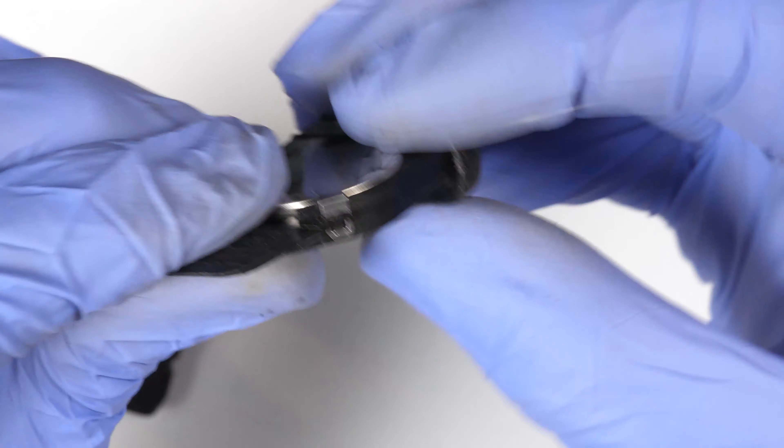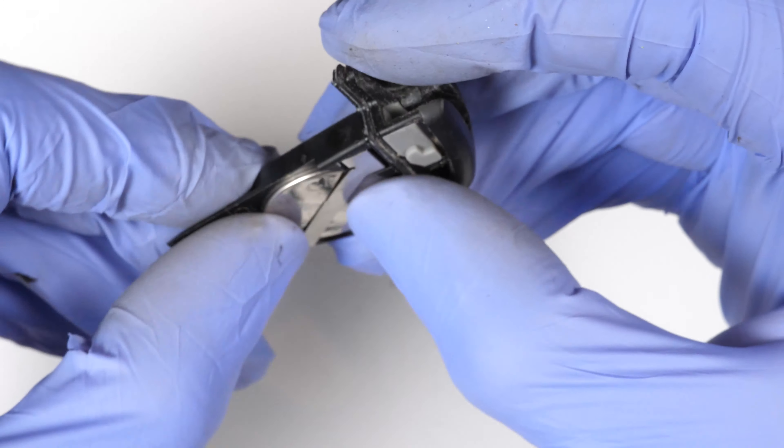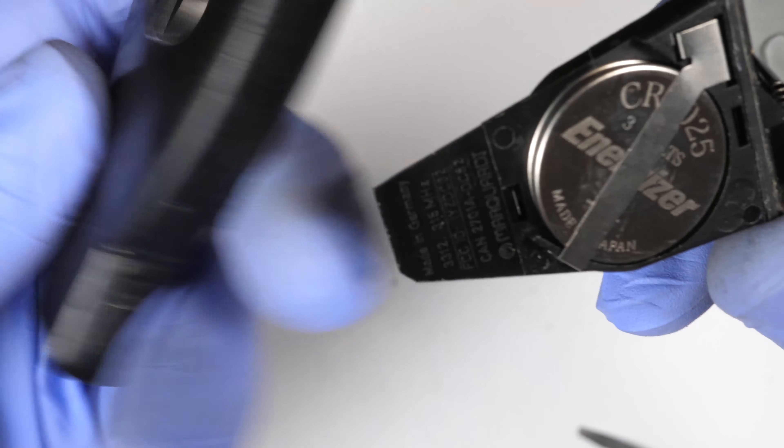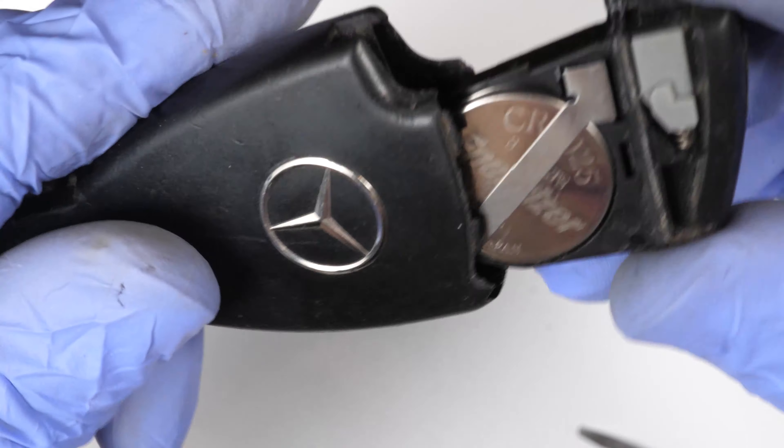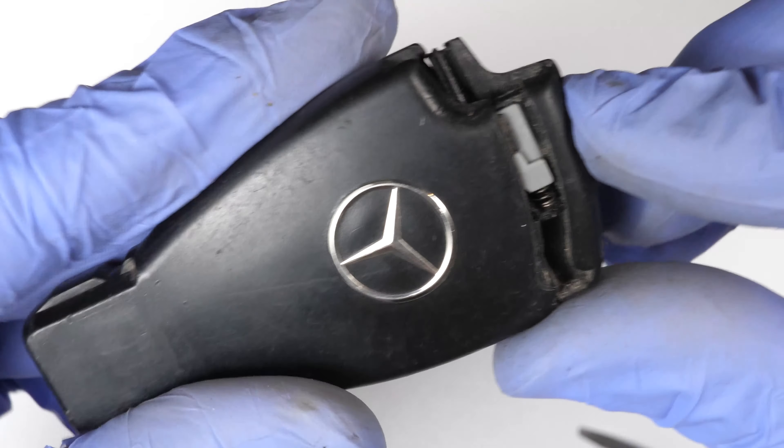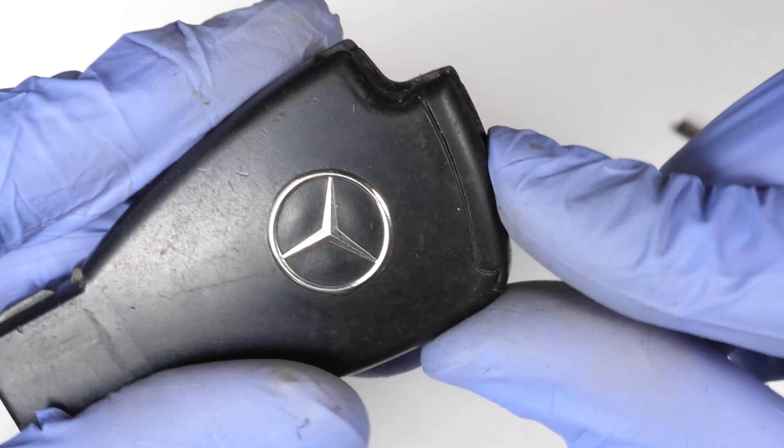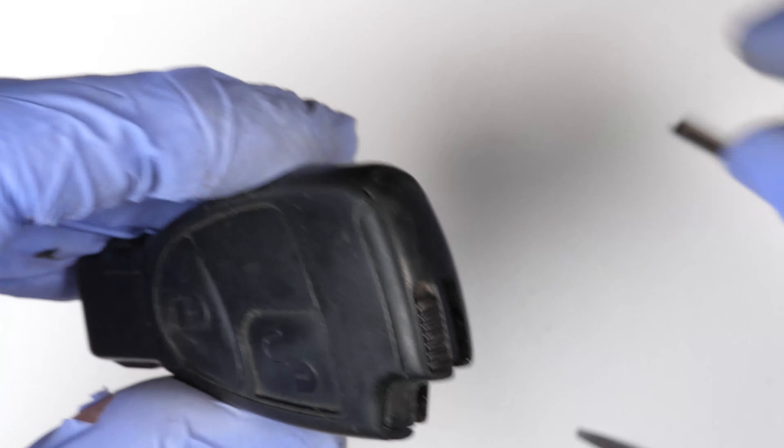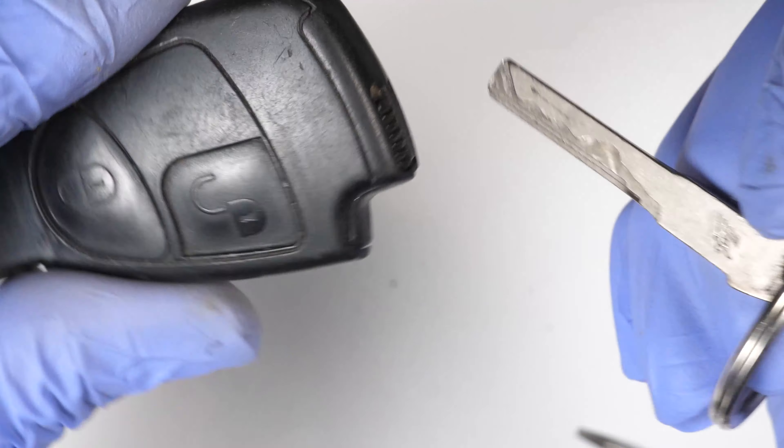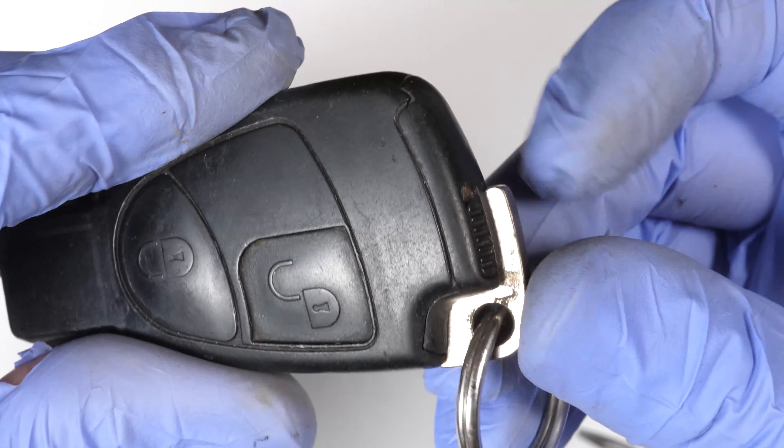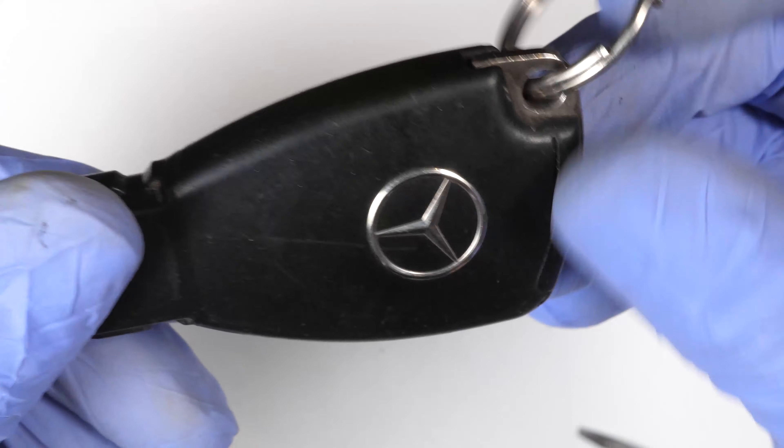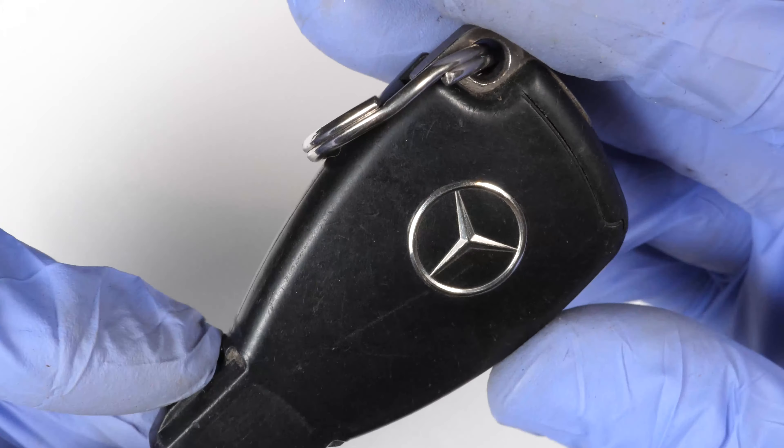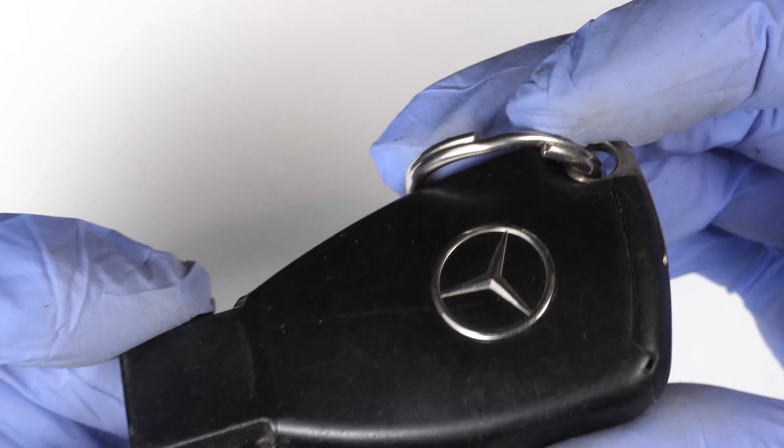So now you just need to place this back inside of the casing right here. You'll feel it inside, and take back the key and click it back in place. So this is how you change the battery inside of this Mercedes key fob.